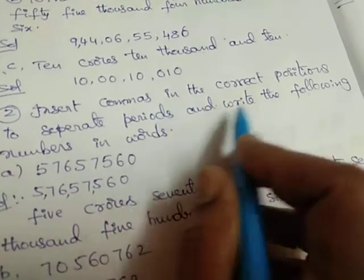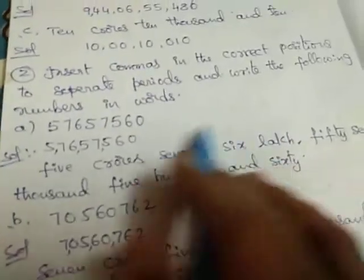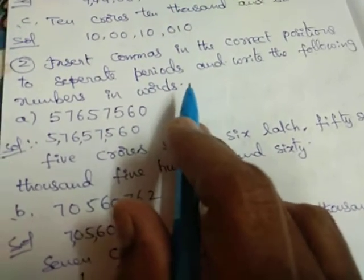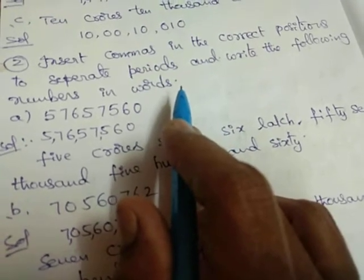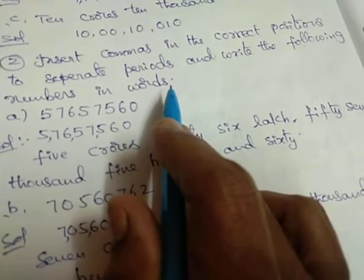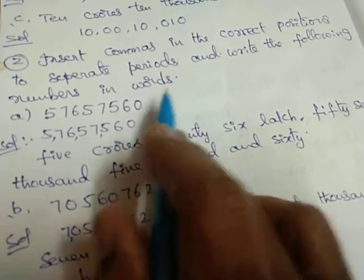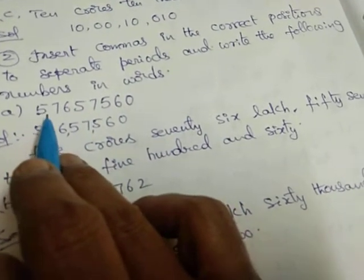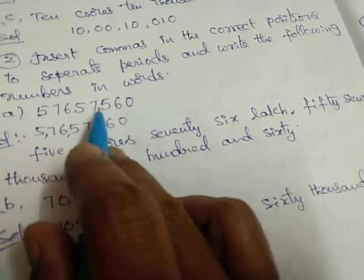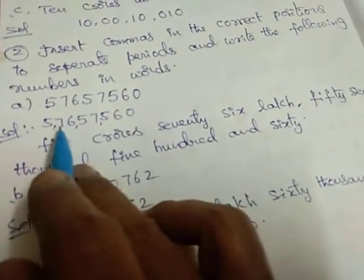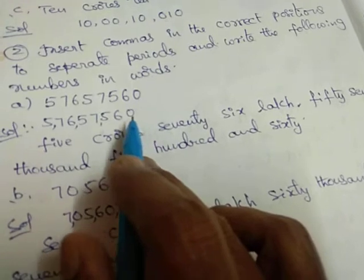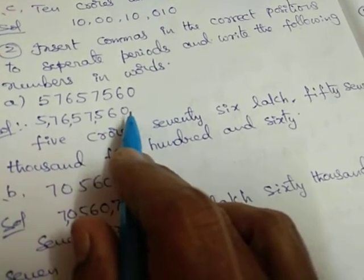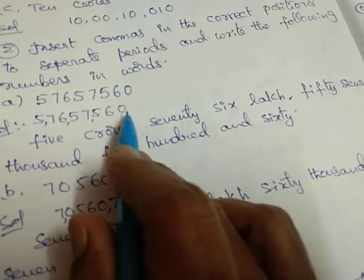Second sum: insert commas in the correct positions to separate periods and write the numbers in words. Since no number system is specified, we take it as the Indian system — that is, the Hindu-Arabic system.